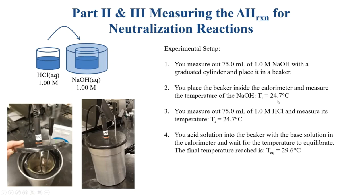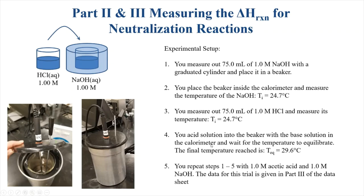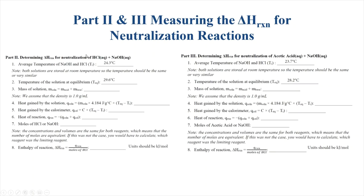That was the first experiment. You'll then repeat the setup: take a fresh 75 mL of NaOH and record its temperature, then take a fresh 75 mL of acetic acid at the same concentration — 1 molar — and run it again. The data for this is given in part three of the data sheet. We're going to compare the delta H of reaction for the strong acid relative to the weak acid, acetic acid. On the data sheet you'll see part two and part three with the same set of data — the average temperature of NaOH/HCl and the equilibrium temperature: 29.6°C for HCl or 28.2°C for acetic acid.